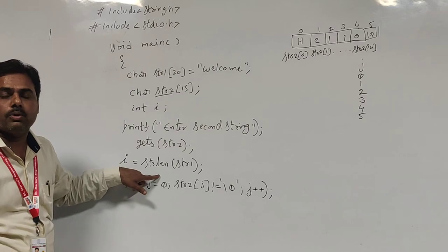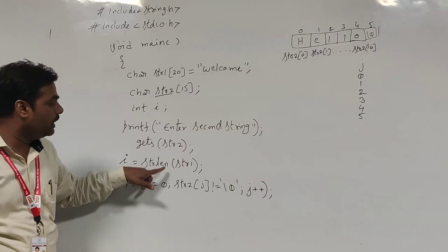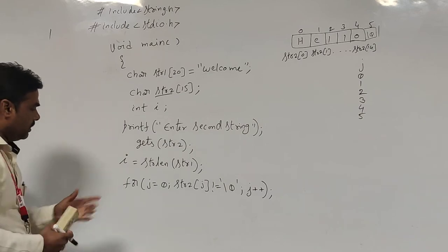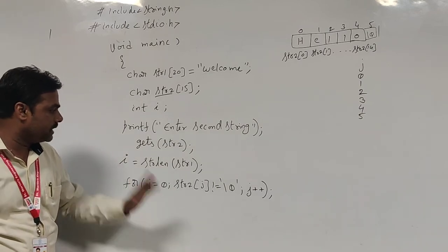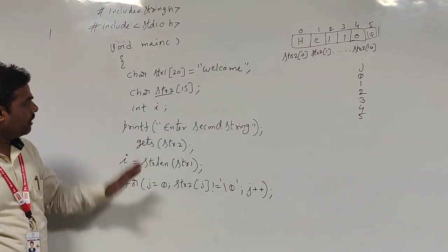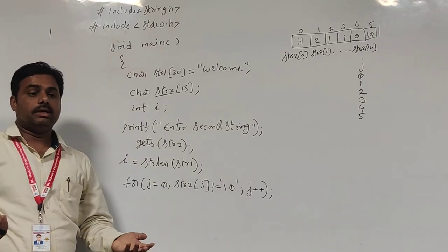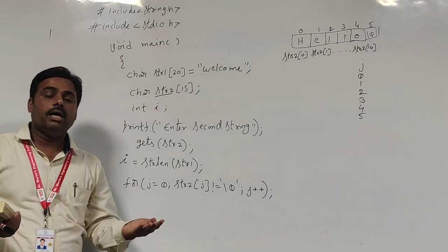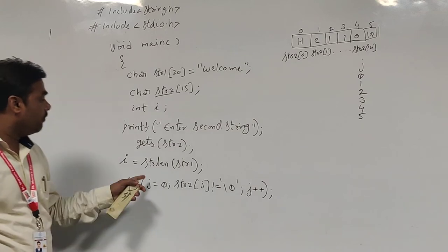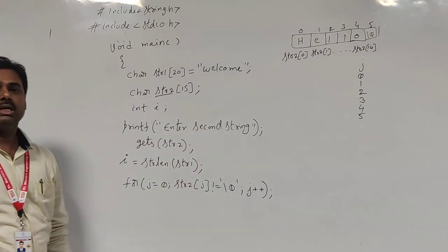So the first string's length is calculated using the strlen built-in function available in string.h, and the second string's length is calculated using a for loop. Now I would like to display the string in reverse order — for example, displaying str1 in reverse order.